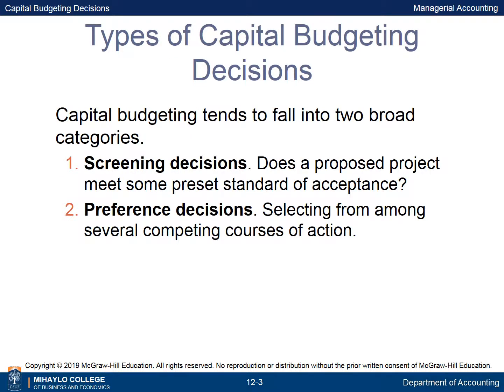Capital budgeting decisions tend to fall into two broad categories: 1. Screening decisions — does a proposed project meet some pre-set standard of acceptance? 2. Preference decisions — selecting from among several competing courses of action.